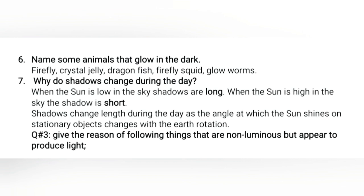Question number 7: why do shadows change during the day? When the sun is low in the sky, shadows are long. When the sun is high in the sky, the shadow is short. Shadows change length during the day as the angle at which the sun shines on a stationary object changes with the earth's rotation.